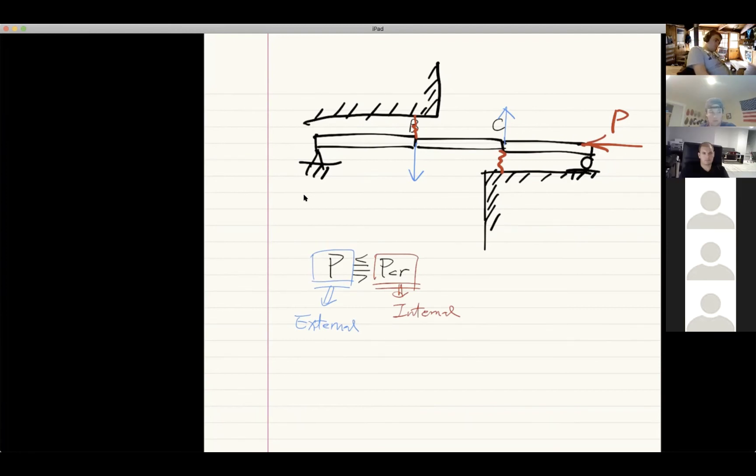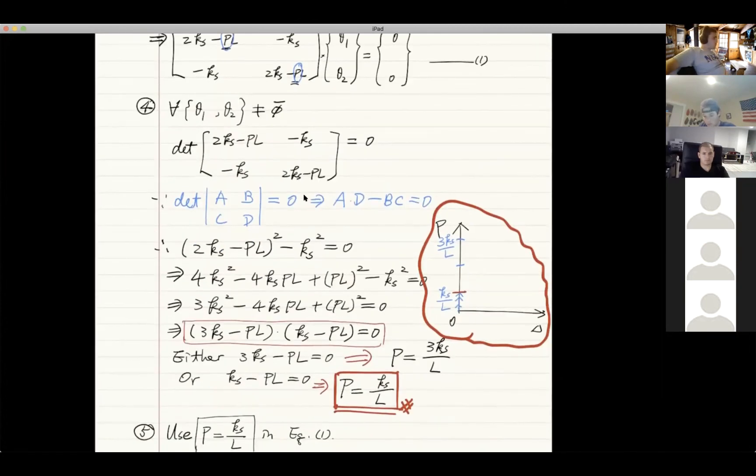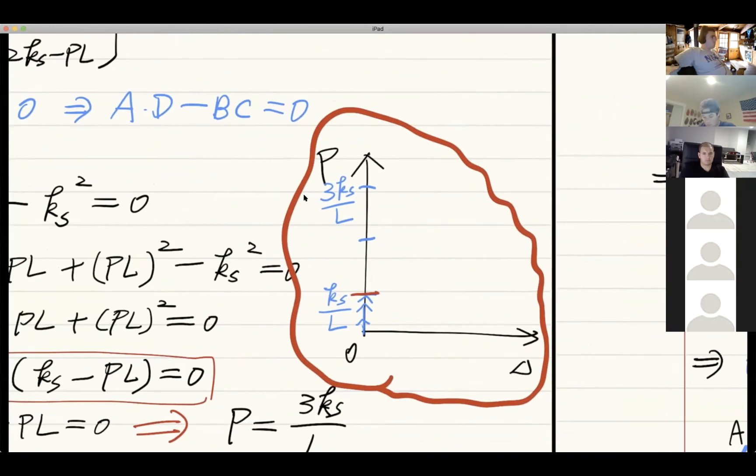So you mean any value past the PCR is going to buckle? No, that's not what I meant. If you find a way to bypass this one by using different kinds of bracing designs to make sure that this buckling mode would not happen in reality, it's going to pass this buckling mode and keep increasing until you hit the second buckling mode. You will not buckle from here until it hits the next one. If that's not the case, you will buckle at the first buckling mode, which is the lowest one.